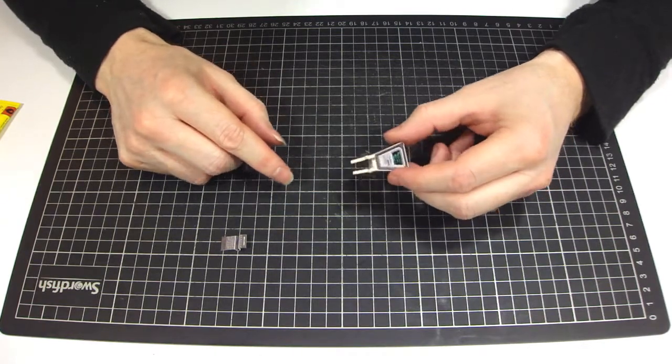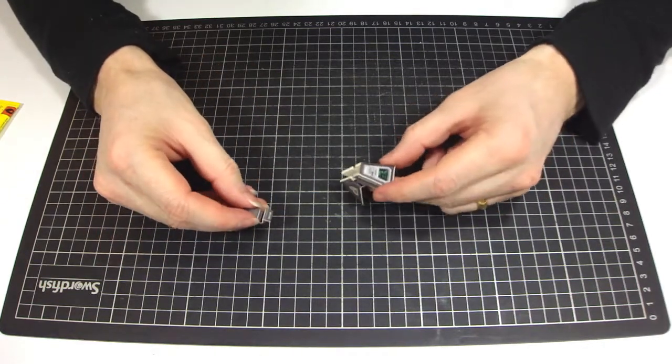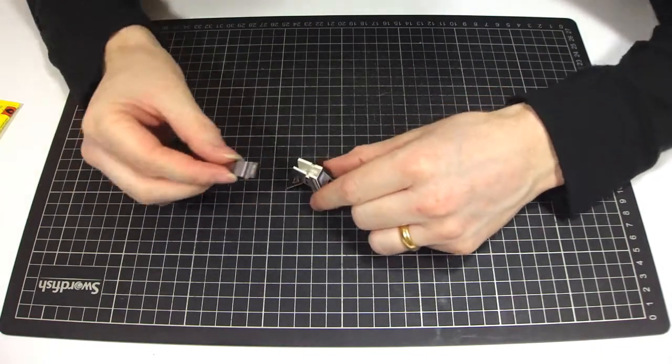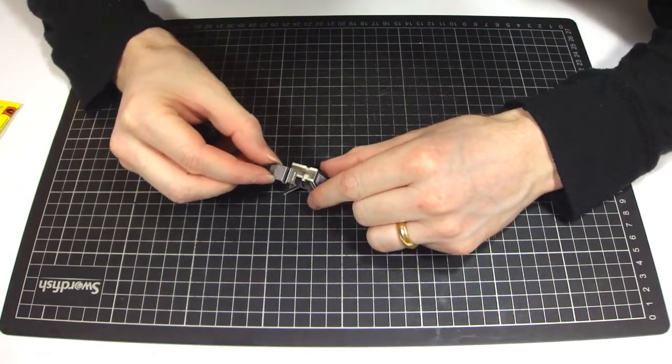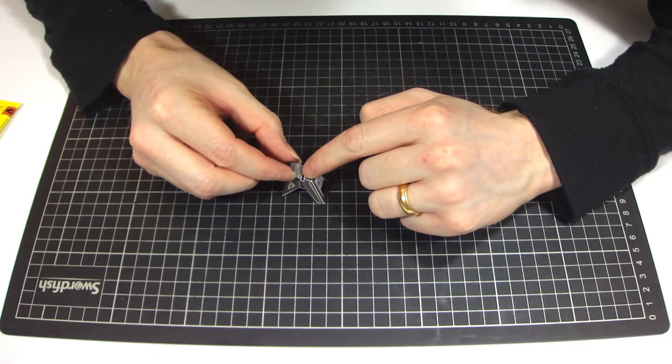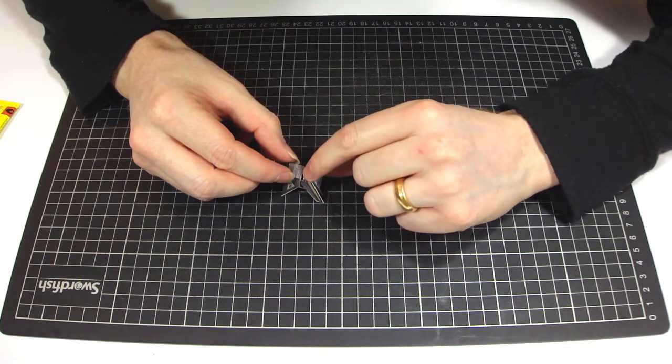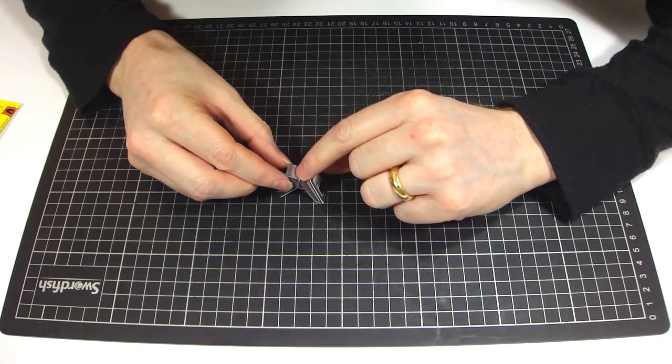That's the back bit put on. The next thing I want to do is this last bit, this front little bit here. Sometimes this can be a bit of a squash, a bit of a tight fit. But you can generally just squash it into place.